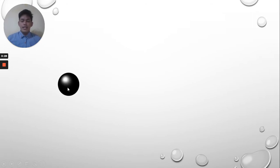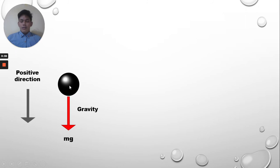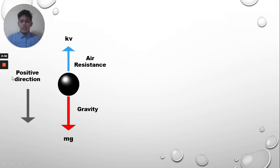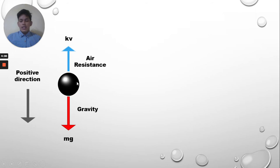We have the cannonball moving downward with the help of gravity and air resistance. We consider the downward direction as positive, so the movement of an object downward is the positive direction. The air resistance is negative because it acts in the opposite direction of the object moving downward. We consider the downward direction as positive because we only focus on the downward movement of the object.